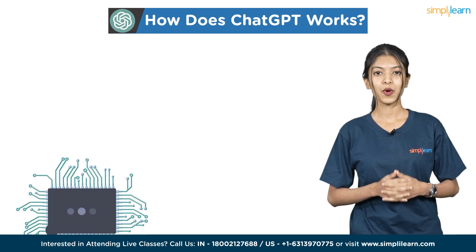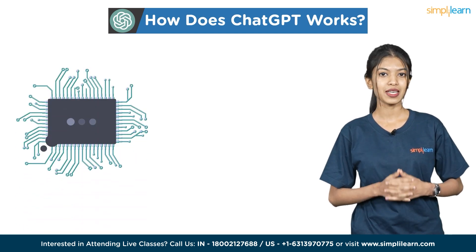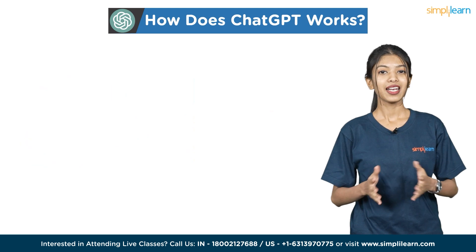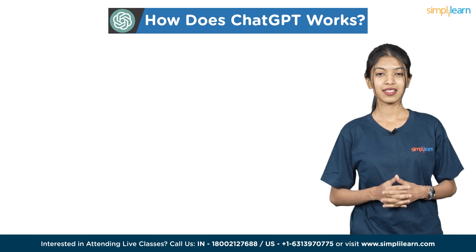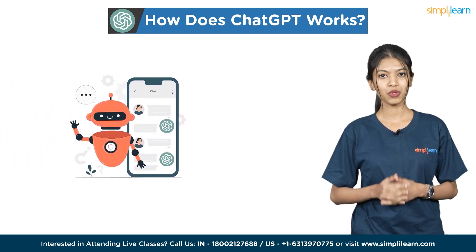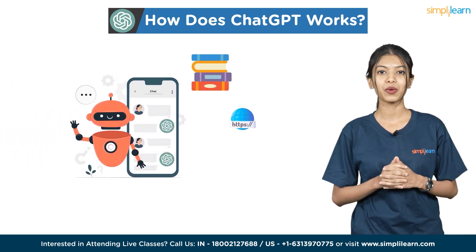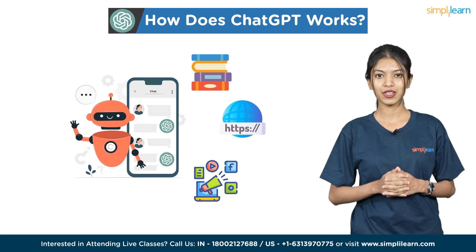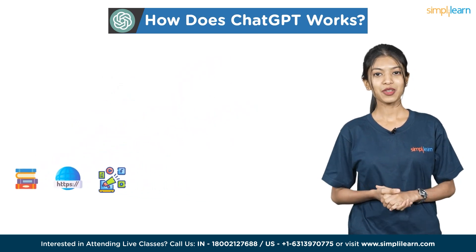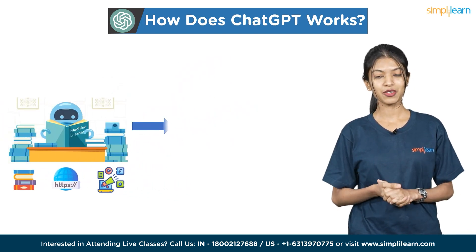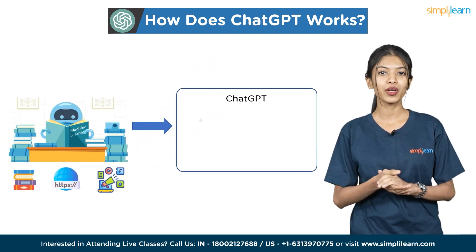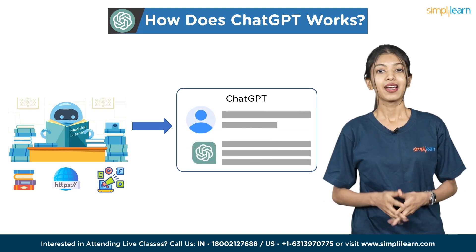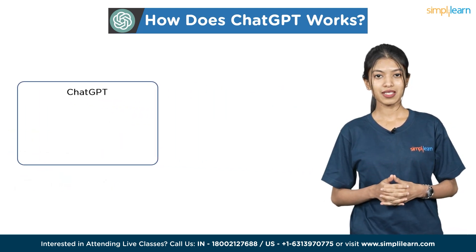Now let's first discuss how ChatGPT works. ChatGPT generates responses to text input using a method called transformer architecture. A large volume of text is fed into ChatGPT from various sources including books, websites, and other social media platforms. The model then uses this information to forecast the following word in a phrase based on the words that came before it.